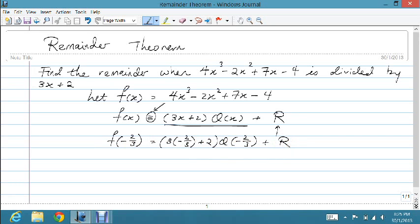Now r is a constant so it won't be affected by your value of x. So in the first term here I get 0. So 0 times this quotient is also 0 plus r. So effectively when I substitute negative 2 over 3 into x I get the remainder immediately.